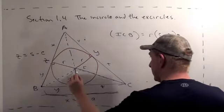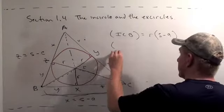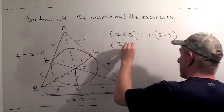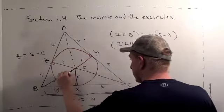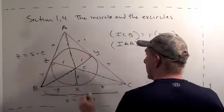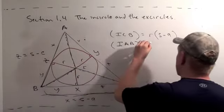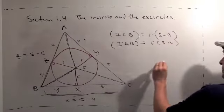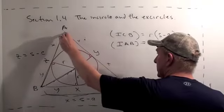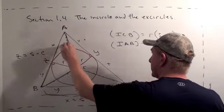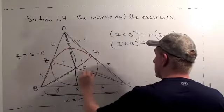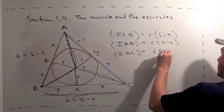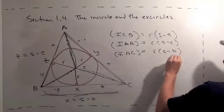In other words, the base times the height of this triangle. The triangle IAB, this triangle here, the area is the height, R, times S minus C. And this triangle here, I'll insert it this way, IAC, equals R times S minus B for the same reason.